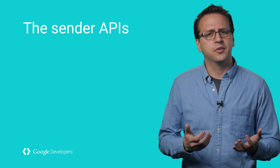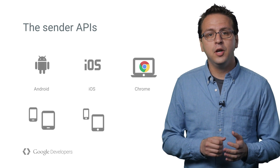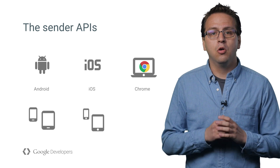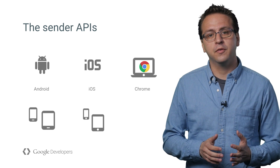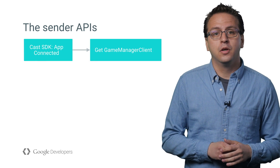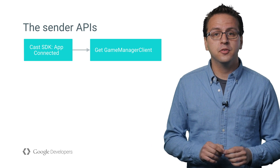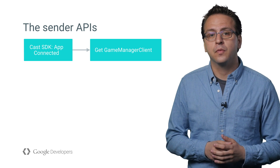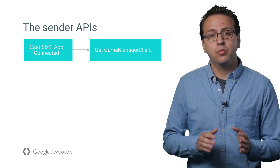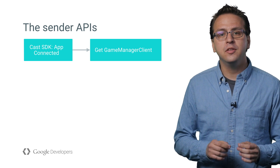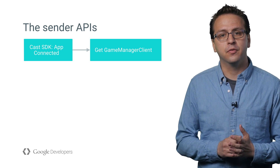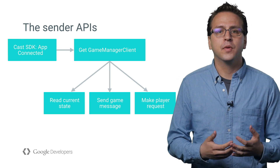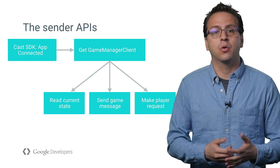Let's look at the APIs for our sender devices. The sender APIs are available on Android, iOS, and Chrome and work the same across platforms. All request operations performed by the sender device are asynchronous. To connect the sender and register a player, first you must initialize the Cast SDK. Once this is done, you'll be ready to request a Game Manager client instance. It contains a copy of the entire state on the receiver device and will be updated automatically. From this point on, you can read the current state, send game messages, and make player requests.